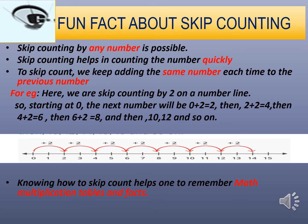Third, to skip count, we keep adding the same number each time to the previous number. For example, when skip counting by two on the number line, starting at zero, the next number is zero plus two, which is two. Then two plus two equals four, four plus two equals six, six plus two equals eight, and then ten, twelve, and so on. We are just adding two every time.